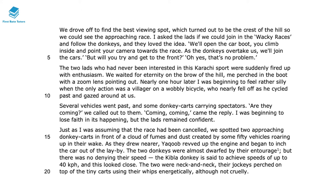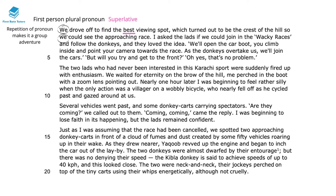This opening is really interesting and describes her viewing and waiting initially for the donkey race to occur. She begins by repeating the first-person plural pronoun 'we', and this repetition makes it almost seem like a group adventure between her and the two men accompanying her. She then uses the superlative 'best' to set up the scene, making us expect something's going to happen immediately. This reflects the excitement that the author Emma Levine feels herself. She also speaks using a very conversational register, using colloquial language like 'lads' — and do remember colloquial language is informal language. This adds a very disarming tone to the text and makes it really relatable.